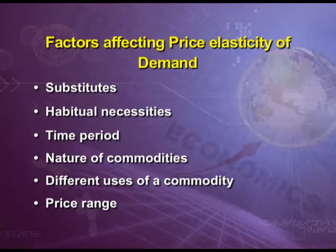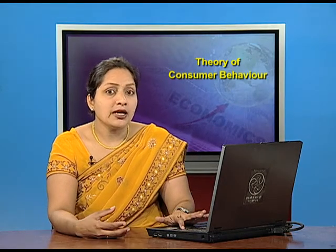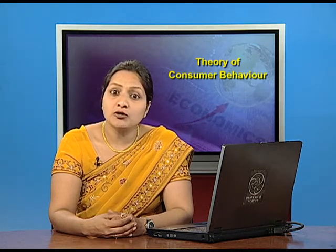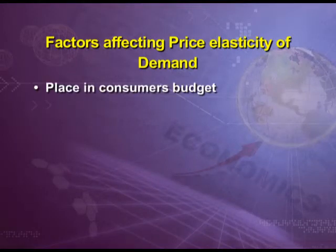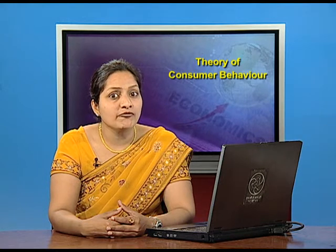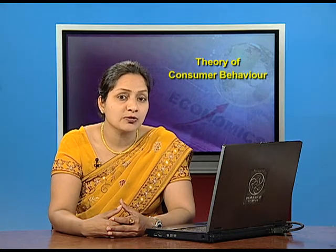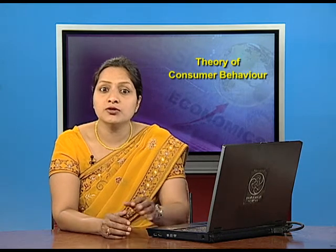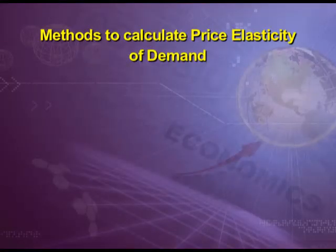The next factor is price range. Highly priced commodities like diamonds and very low-priced items like a pencil have low price elasticity, since a change in their price has little effect on the consumer. Commodities in the medium price range are price elastic. The next factor is place in consumer's budget: demand for a commodity is inelastic if the amount spent on it is a very small fraction of total expenditure — for example, matchbox, needle, salt. For high-priced items like cars and air conditioners that form a major portion of total expenditure, elasticity of demand is likely to be high.